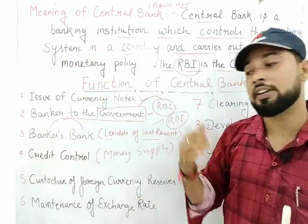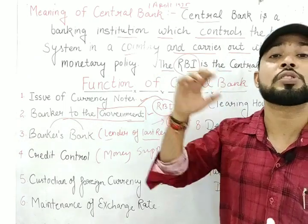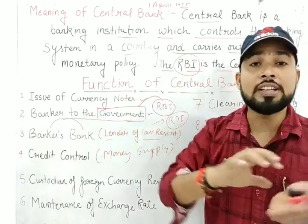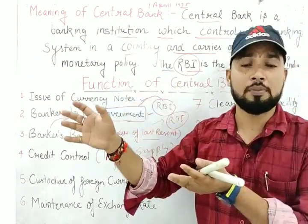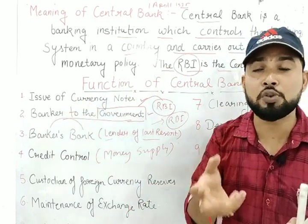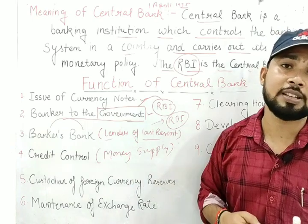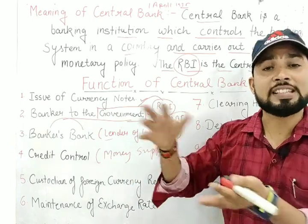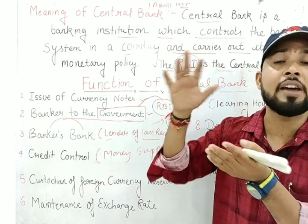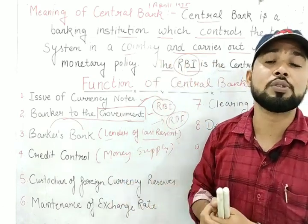The fourth function is control of money supply. The increase as well as decrease of money supply in the economy is controlled by RBI. RBI uses different tools to control money supply in the economy, which we will discuss in the next lecture.